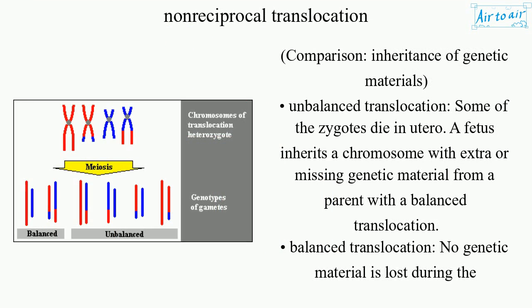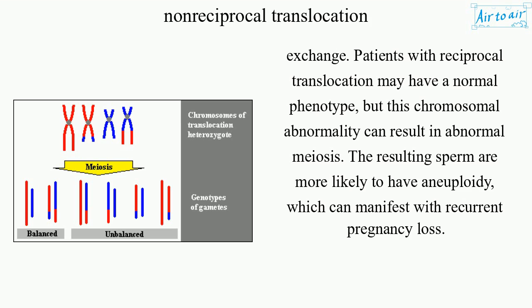Comparison of inheritance: In an unbalanced translocation, some of the zygotes die in utero, as a fetus inherits a chromosome with extra or missing genetic material from a parent with a balanced translocation. In a balanced translocation, no genetic material is lost during the exchange. Patients with reciprocal translocation may have a normal phenotype, but this chromosomal abnormality can result in abnormal meiosis. The resulting sperm are more likely to have aneuploidy, which can manifest with recurrent pregnancy loss.